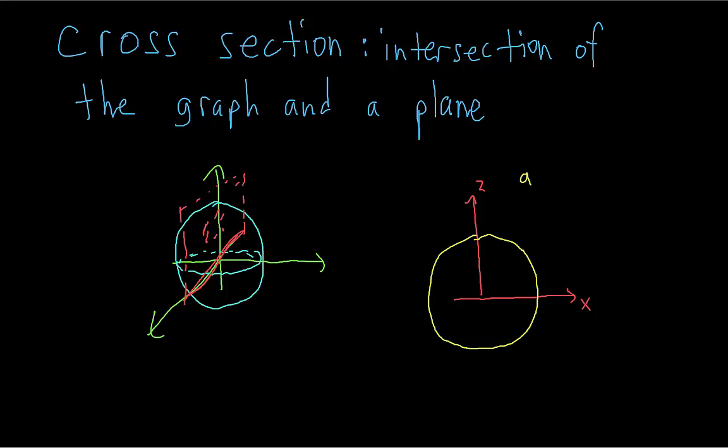It's going to be in the zx-plane because we're holding y constant. At y equals zero, the zx-plane looks like this, and the cross-section of the graph is a circle. The general idea is that we take many cross-sections — for example, another cross-section holding x constant and then another holding z constant. Once we have all of those cross-sections, we get an idea of what the whole quadratic surface is going to look like.